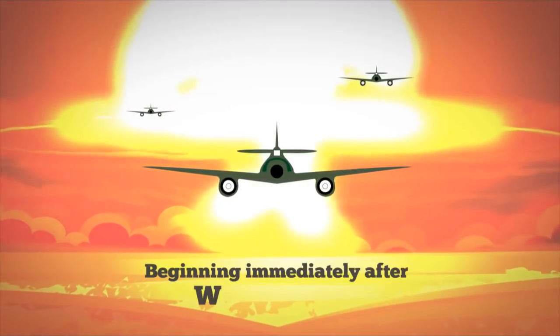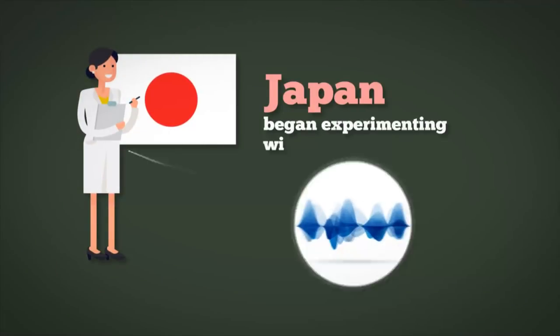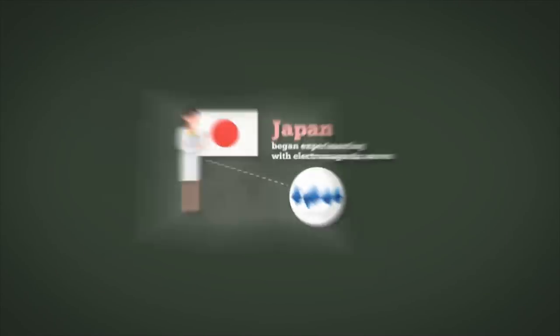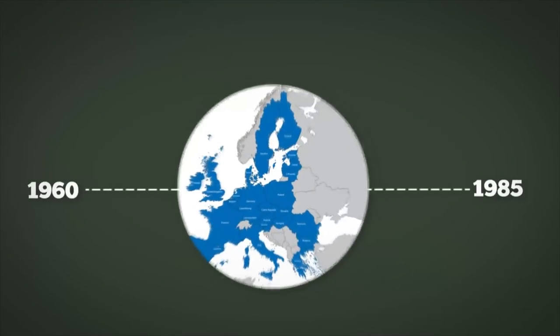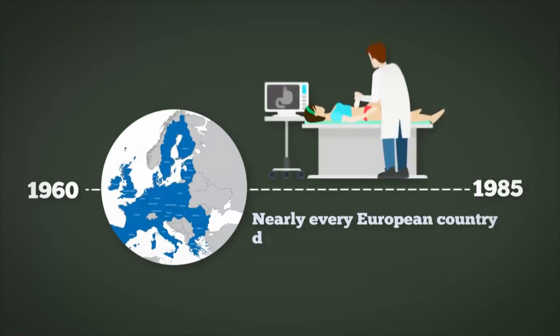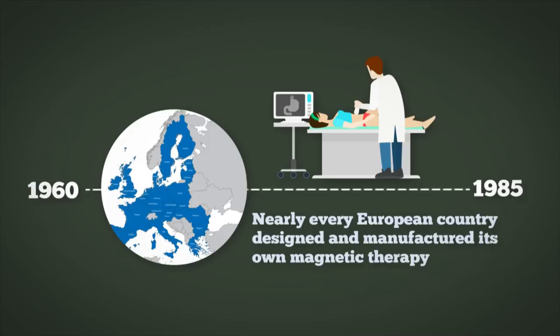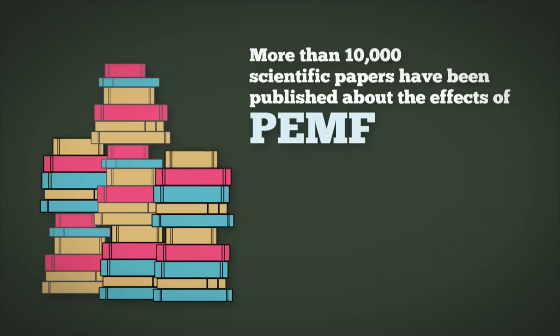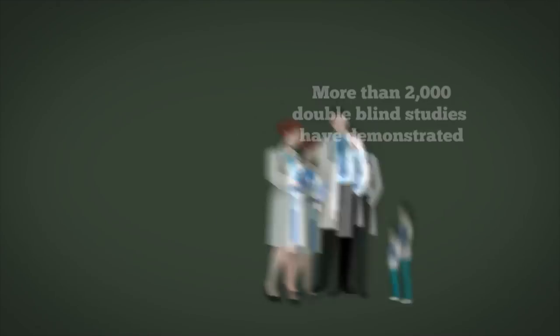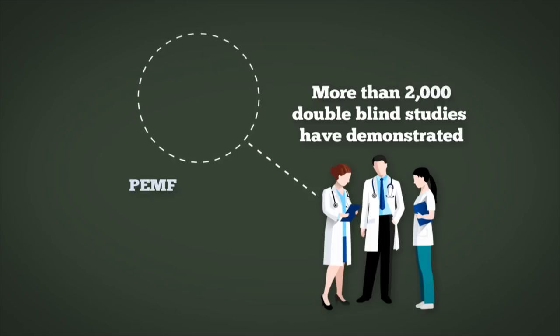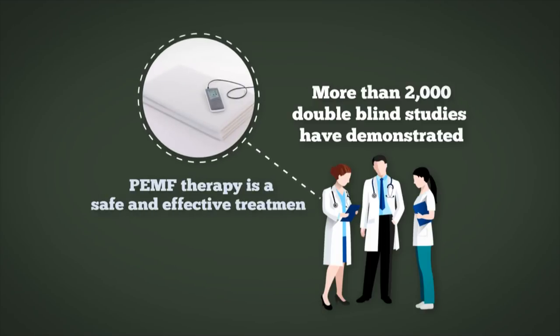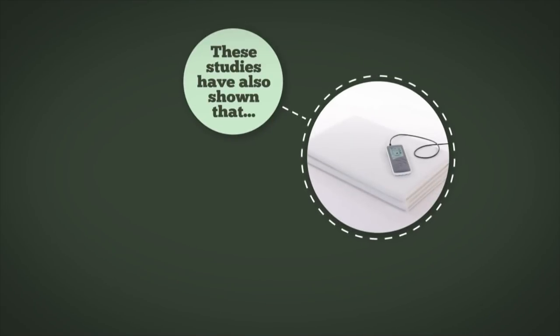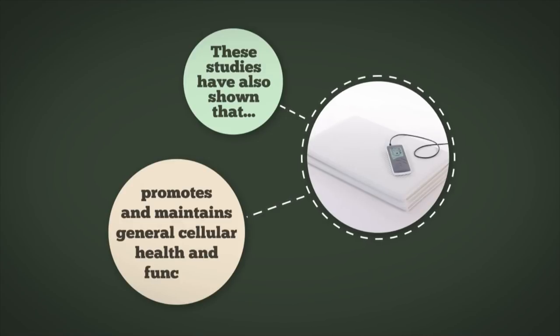Beginning immediately after World War II, Japan began experimenting with electromagnetic waves, and this technology quickly spread to Europe. Between 1960 and 1985, nearly every European country designed and manufactured its own magnetic therapy systems. More than 10,000 scientific papers have been published about the effects of PEMF. Also, more than 2,000 double-blind studies have demonstrated that PEMF therapy is a safe and effective treatment for a variety of conditions. These studies have also shown that PEMF therapy promotes and maintains general cellular health and function.